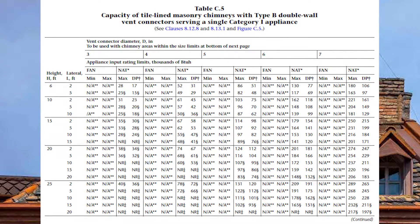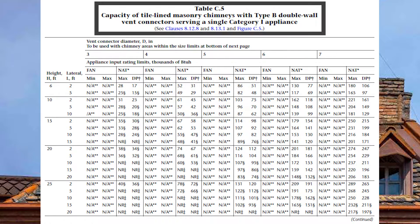First we should look at the tables we're about to be using. Turn to page 203 in the gas code and go to Table C5. Table C5 says: capacity of tile-lined masonry chimneys with Type B double wall vent connectors serving a single Category 1 appliance.